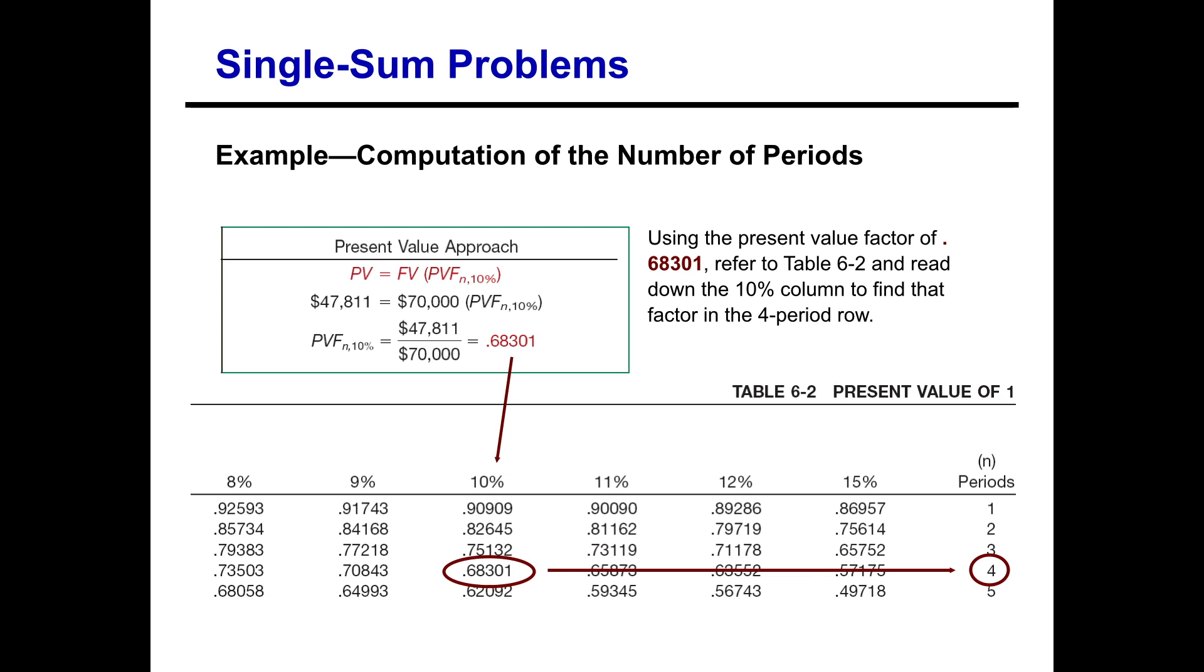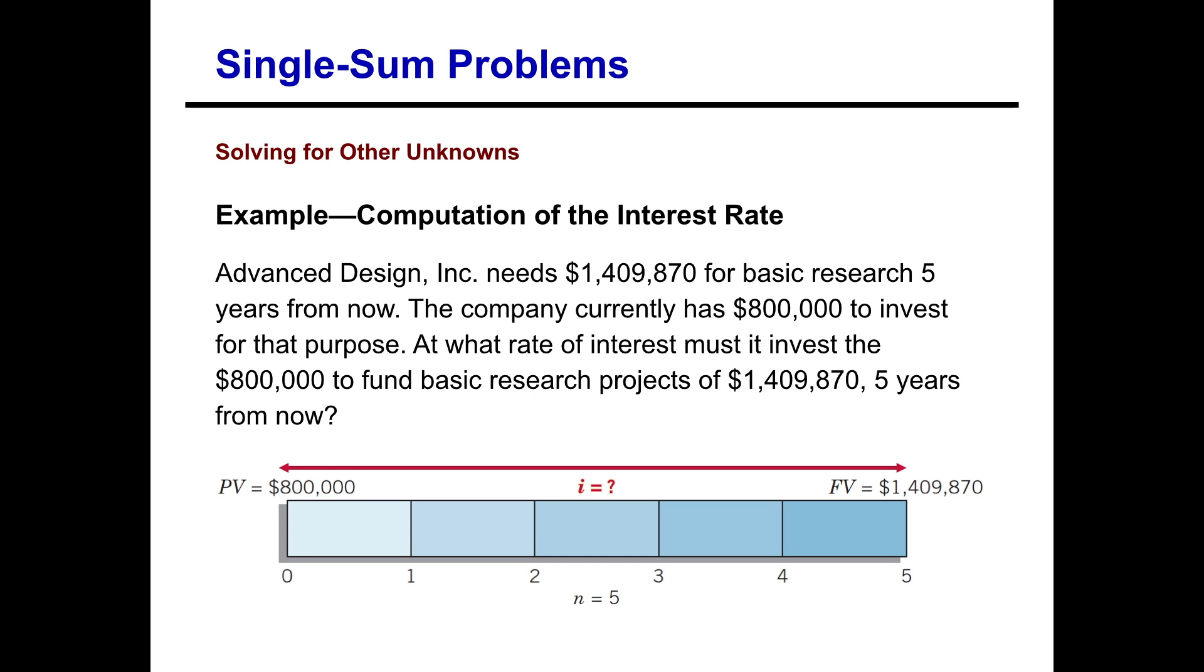We can also use these two different approaches to solve for interest rates. So here we have Advanced Design Incorporated. They need $1,409,870 for basic research five years from now. The company currently has $800,000 to invest for that purpose. At what rate of interest must it invest the $800,000 to fund basic research projects of $1,409,870 five years from now.